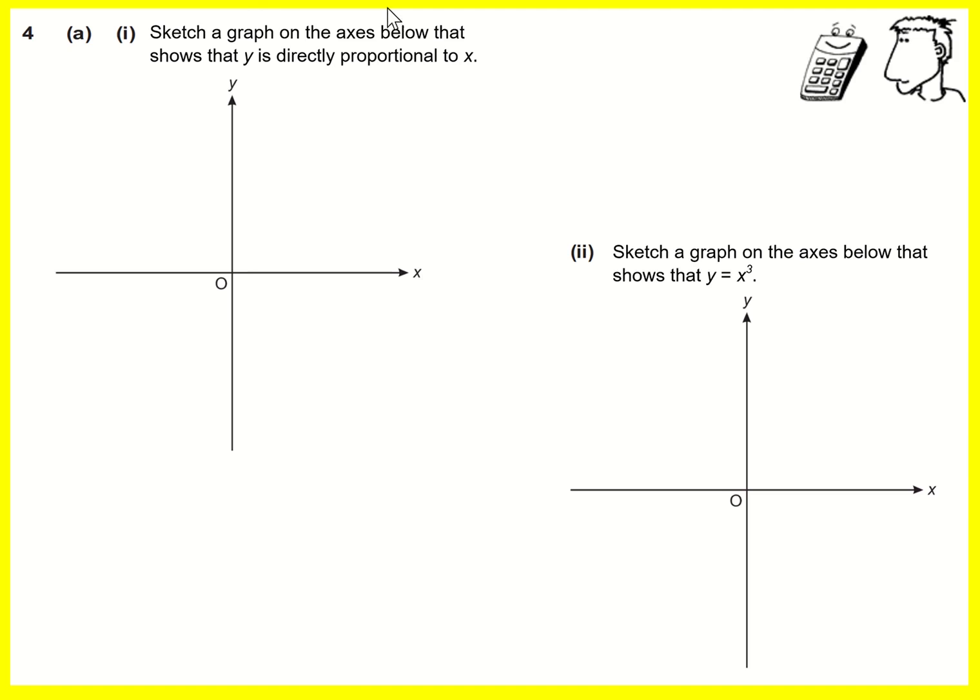If y is directly proportional to x, that basically means that as x doubles, y doubles; as x triples, y triples, and so on. What that means is you get a straight line that goes through the origin. So any straight line that goes through your origin is correct.